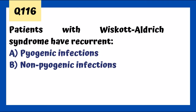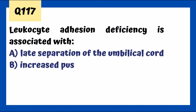Leukocyte adhesion deficiency is associated with late separation of the umbilical cord and decreased pus. It's due to a defect in the LFA-1 integrin, involved in migration and chemotaxis of neutrophils. Without neutrophils at the infection site, there's decreased pus — since pus is formed by dead neutrophils. Late umbilical cord separation occurs because neutrophils are involved in that process.